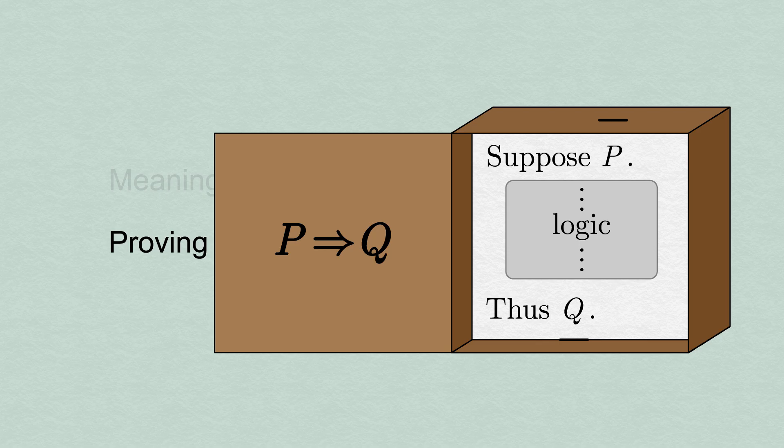To summarize, a direct proof of P implies Q starts by supposing that P is true, which represents accepting the green token P, and after some logical argument ends with the conclusion that Q is true, which is the token that the box outputs.